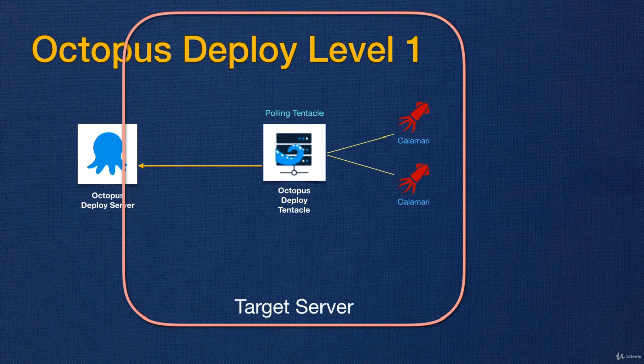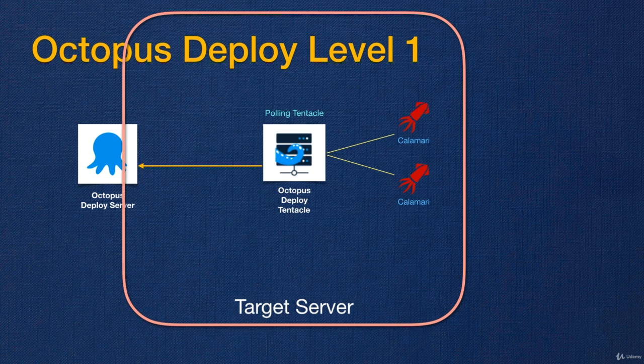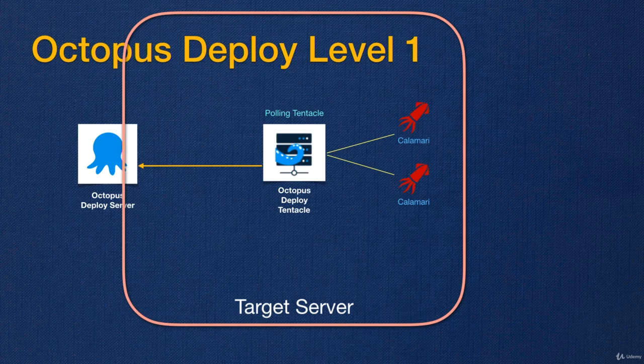License-wise, Octopus Deploy works based on how many active Tentacles you have. For the free cloud product, you can have up to 10 Tentacles. Beyond that, you need to buy a license based on your Tentacle count — for example, 10 additional active Tentacles, and if you exceed that you pay for more. It's a good licensing model where you pay more as your business grows. Let's go and see how to install Octopus Deploy, and also how to sign up for the cloud product.